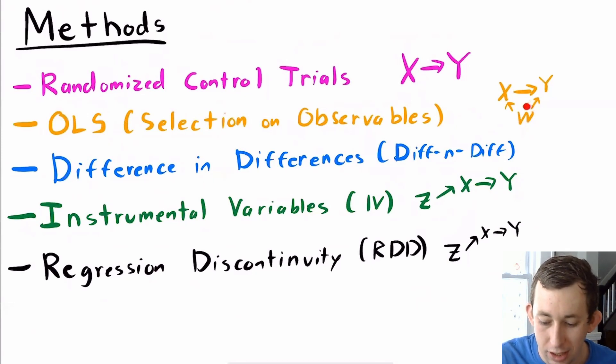If we have these confounders W, we could use something like OLS or regression, selection on observables. We'll talk about difference-in-differences. We'll talk about instrumental variables, which pertains to that case where Z causes Y through X.